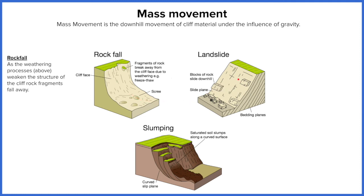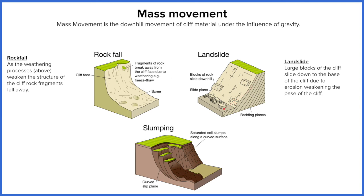We then have landslides. Landslides are huge chunks of the cliff moving down the slope along the bedding plane — the layers of sedimentary rock built up over millennia. When those layers weaken, the entire bedding plane or a section along it will slide down. These are represented by the large chunks shown here in the diagram.